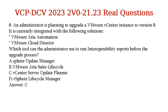Question 8. An administrator is planning to upgrade a VMware vCenter instance to version 8. It is currently integrated with VMware ARIA Automation and VMware Cloud Director. Which tool can the administrator use to run interoperability reports before the upgrade process? A. vSphere Update Manager. B. VMware ARIA Suite Lifecycle. C. vCenter Server Update Planner. D. vSphere Lifecycle Manager. Answer: C.